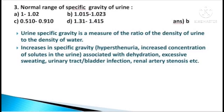Third question: Normal range of specific gravity of urine — options: 1 to 1.02, 1.015 to 1.023, 0.512 to 0.91, and 1.312 to 1.415. The answer is B, 1.015 to 1.023. Urine specific gravity is a measure of the ratio of density of urine to the density of water. Increases in specific gravity, also called hypostenuria, increase the concentration of solutes in the urine associated with dehydration, excessive sweating, urinary tract or bladder infection, renal artery stenosis, etc.